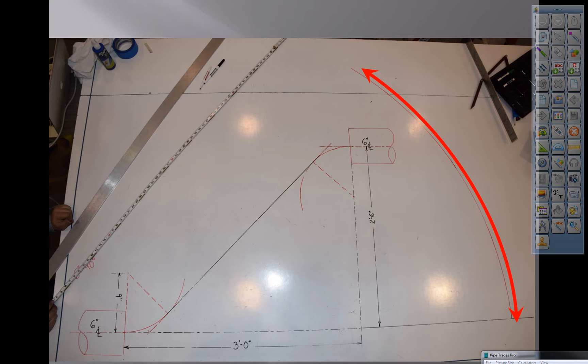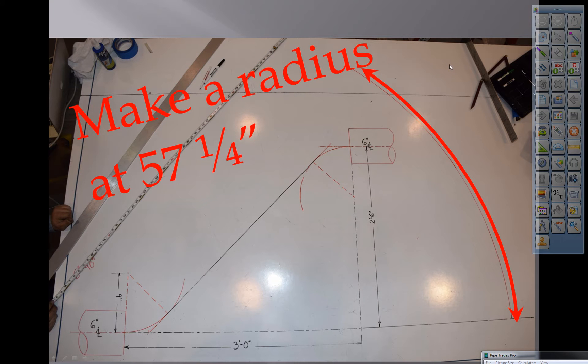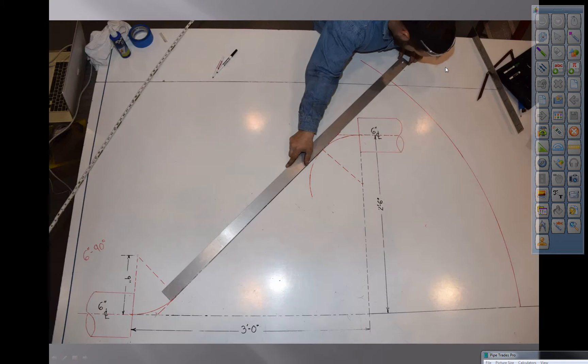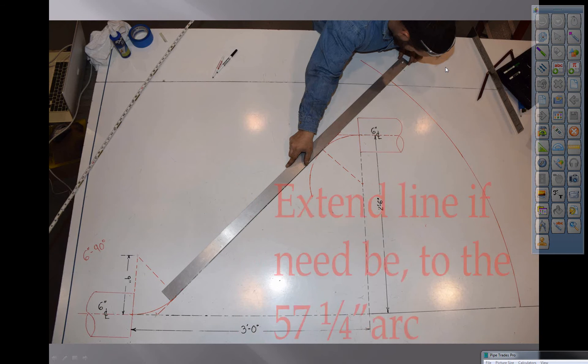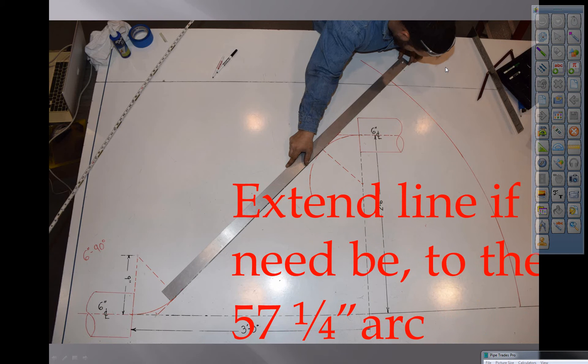That's the arc we just drew from the vertex from the previous slide. And that was the radius at 57 and a quarter inches from that vertex. And that was the radius at 57 and a quarter inches from that vertex.